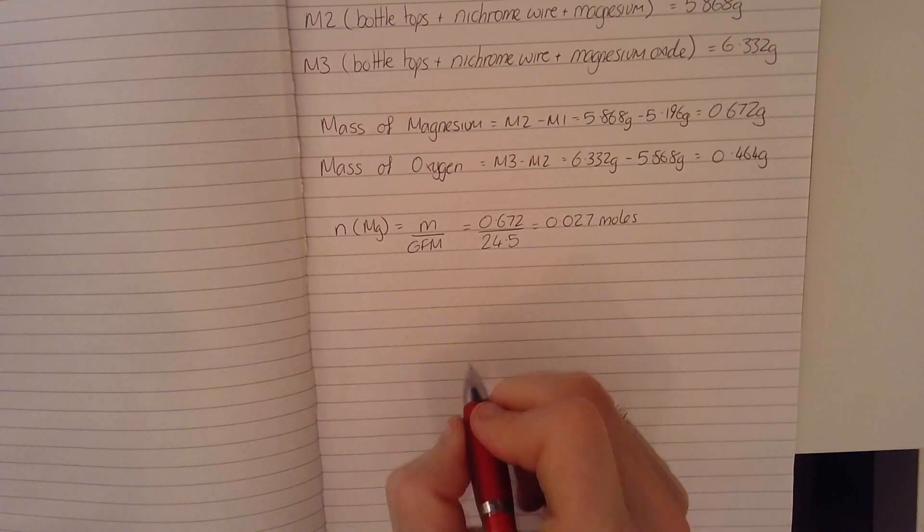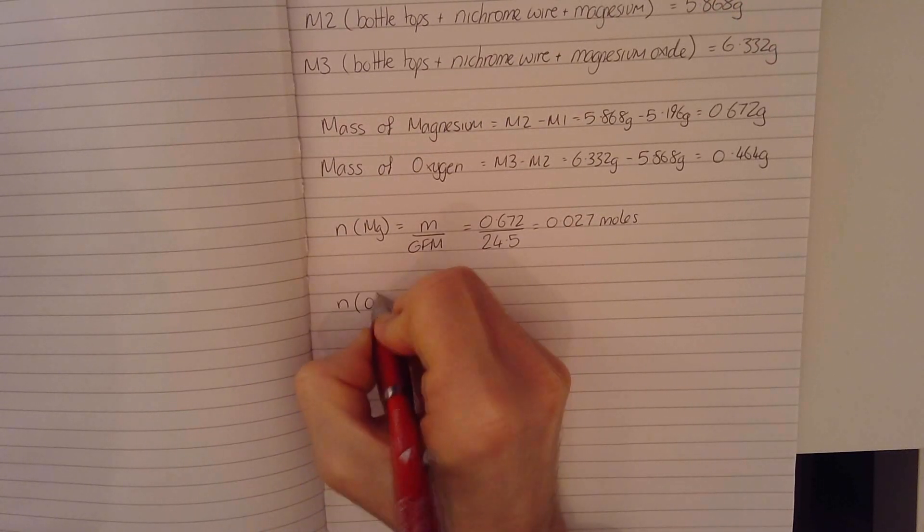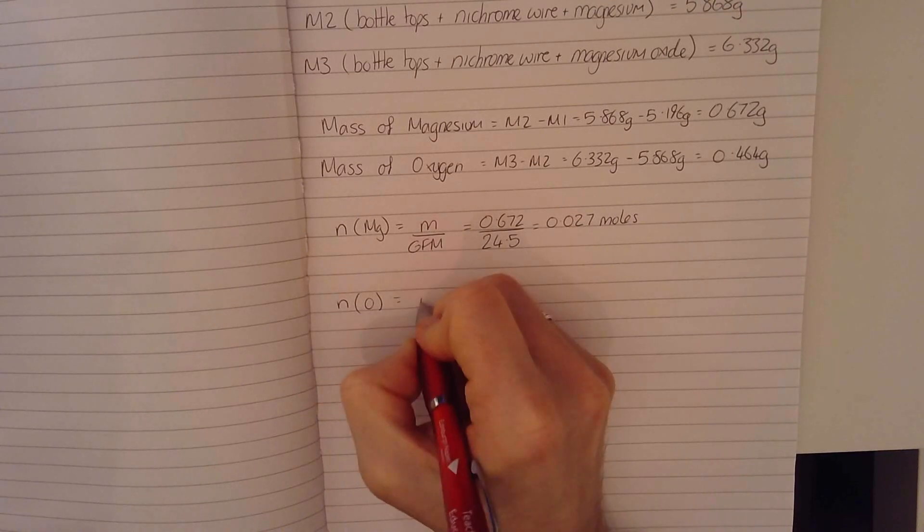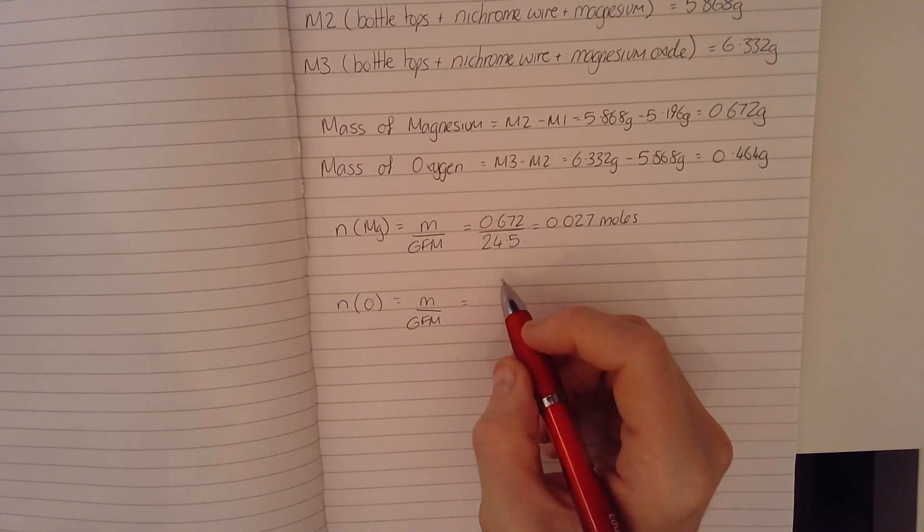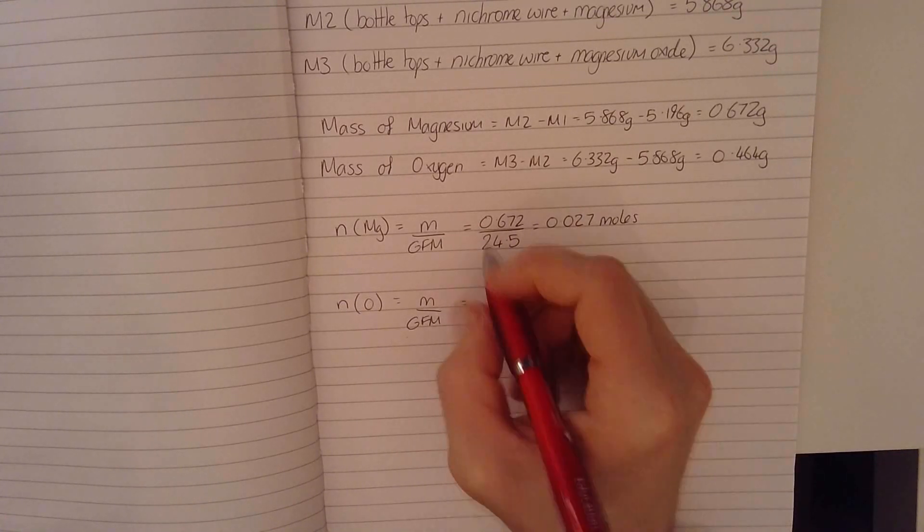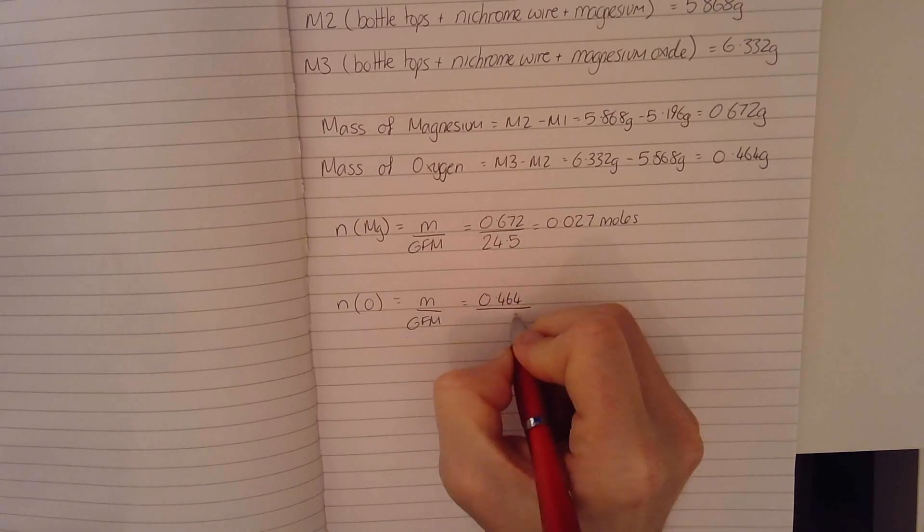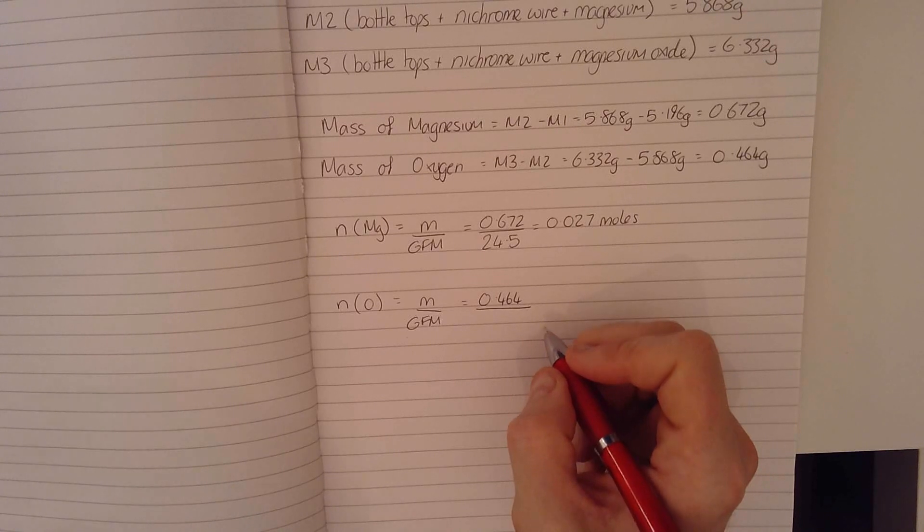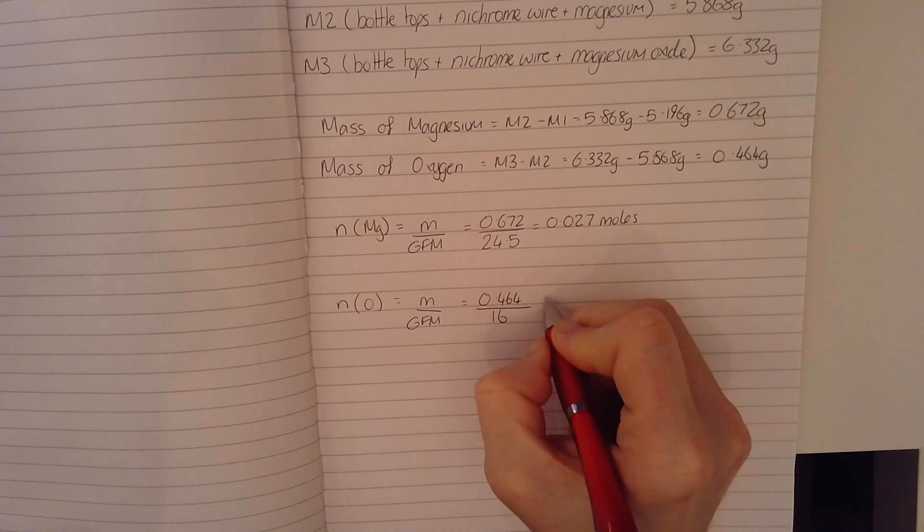Now I want to work out how many moles of oxygen I have. So I can use the exact same calculation. The mass divided by the gram formula mass or the relative formula mass of oxygen, since we're working with an element and the mass was 0.464. And if I look at the data booklet, I find that the relative formula mass of oxygen is 16.